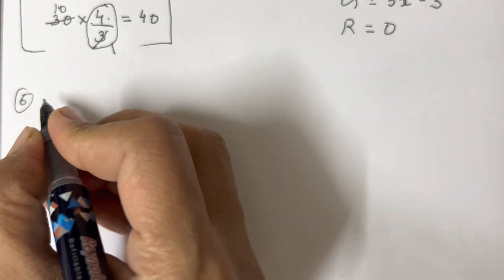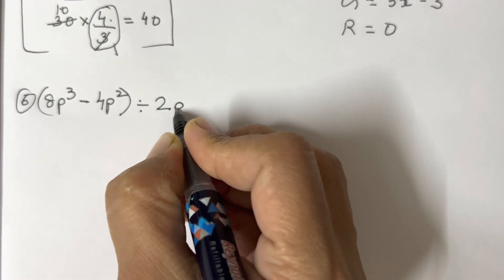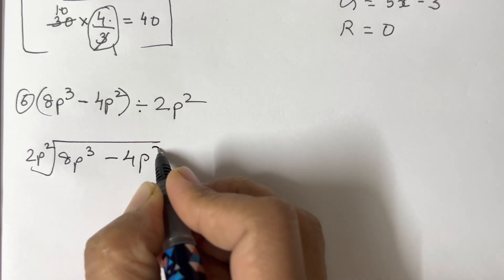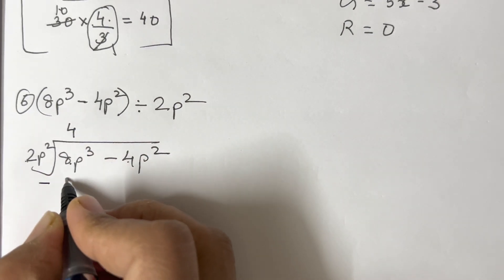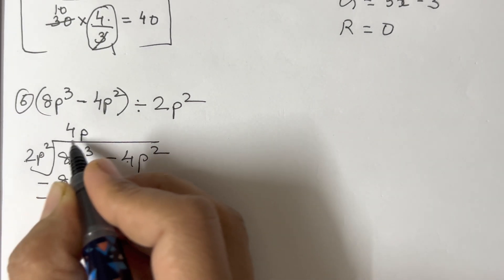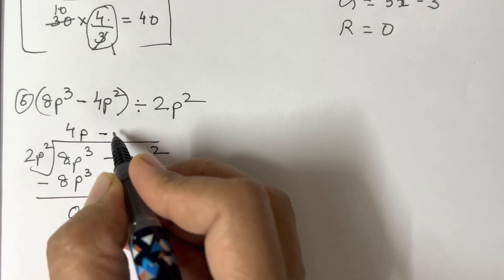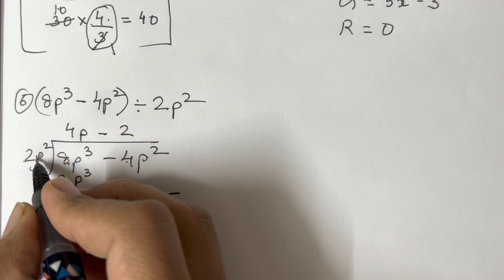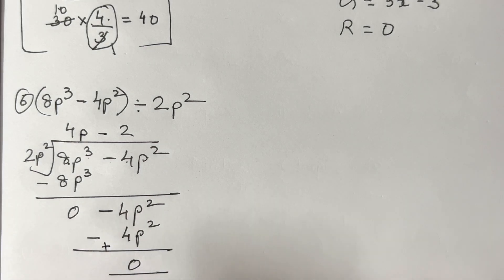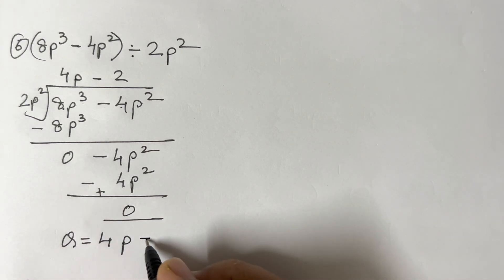The sixth sum is (8p³ - 4p²) ÷ 2p². Set up: 2p² into 8p³ - 4p². In the 2 times table, 8 comes as 2 fours are 8; p² × p = p³, giving 8p³ which reduces to 0. Then -4p²: 2 twos are 4, p² is already there so no extra power needed, giving -4p² which reduces to 0. Quotient is 4p - 2, remainder is 0.